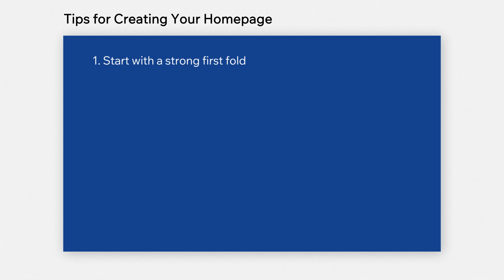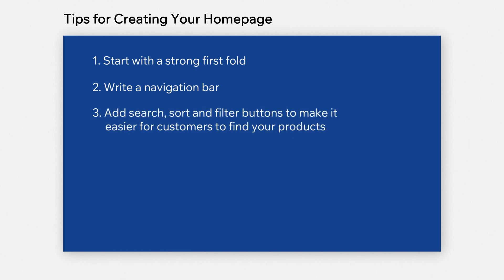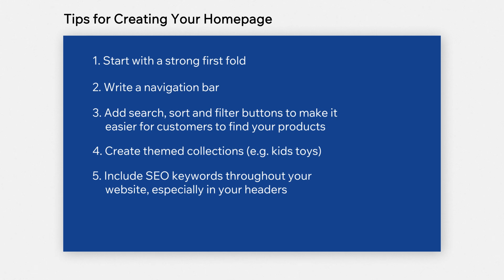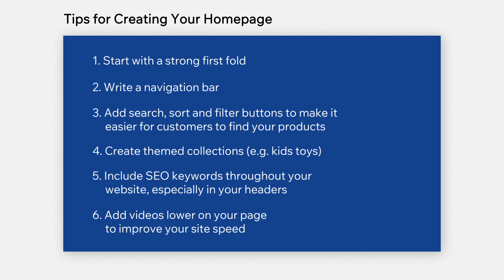Now we're going to talk about some homepage musts. It's very important to have a strong first fold — everything should be prominent and direct toward a clear goal or intent. Next, build out clear navigation with your navigational bar. If you have lots of products, consider adding sorting options, filter options, or a search bar to make it easier to find products. You may also want to create themed collections, include SEO keywords throughout your website especially in the header, and for site speed, add heavier content like videos lower on the page.